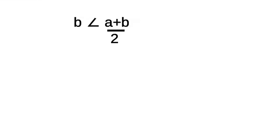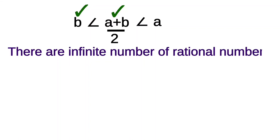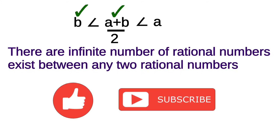We can also find another rational number between b and (a + b) / 2. From this, we can say that there are infinite rational numbers existing between any two rational numbers. I hope this video is helpful — like and subscribe for more useful educational videos.